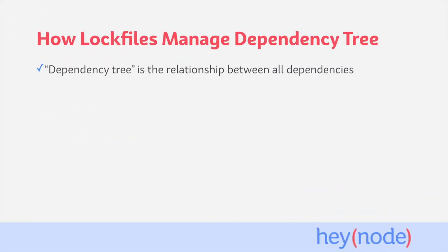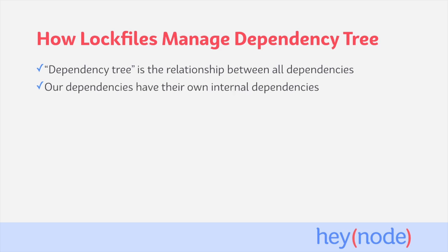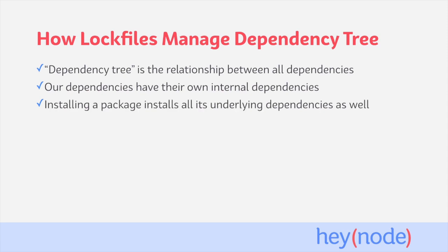A project's dependency tree represents all the dependencies used, their sub-dependencies, and the relationships between them. Packages you install typically rely on other packages, and those rely on their own packages, and so on. When you install a package using the npm CLI, it also installs all the sub-dependencies to your node_modules directory. But because that process is abstracted away from us, it can introduce some issues.